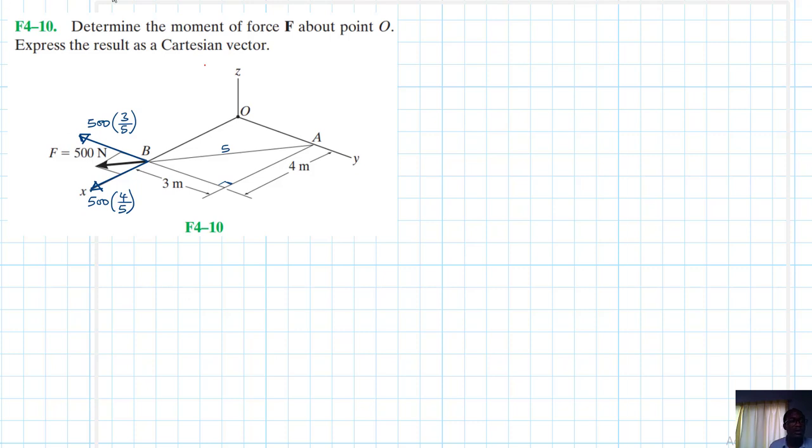So what do we have? We have the resultant moment, moment of the force about point O. So the resultant moment about point O as a vector.